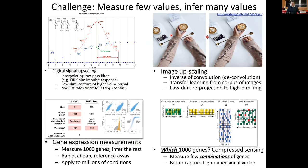More recently there's been massive interest in using upscaling for images — taking a low-resolution image and converting it to a high-resolution one. It sounds almost impossible, but your visual system naturally infers a high-resolution version from a lower-dimensional representation. The question is: how does a computer do that?